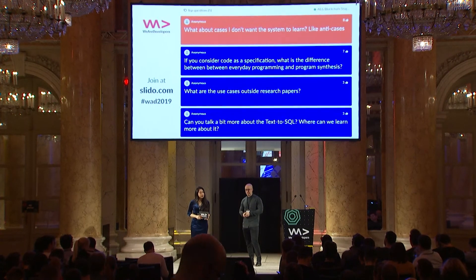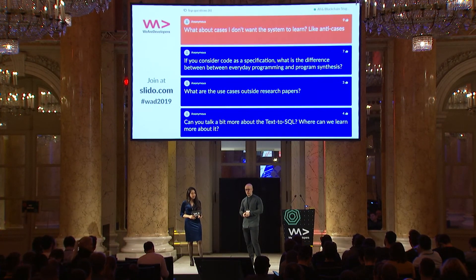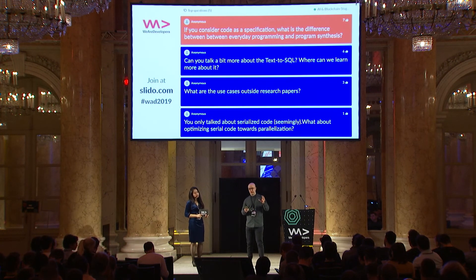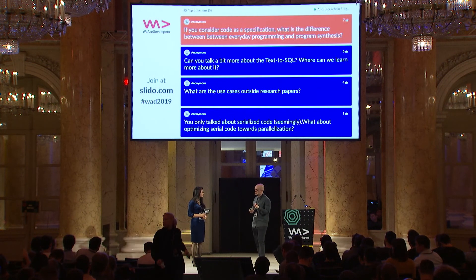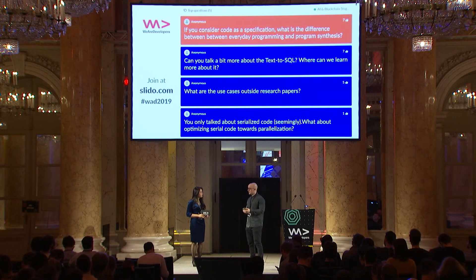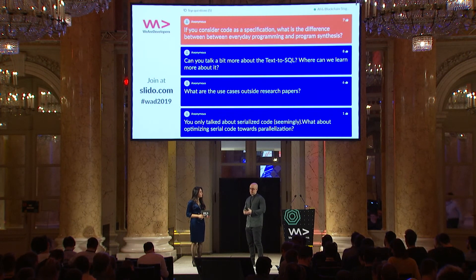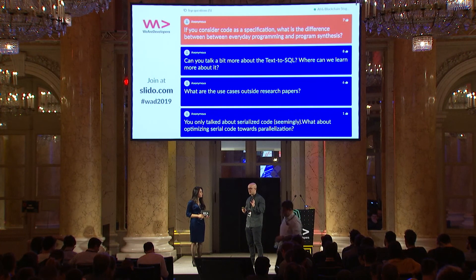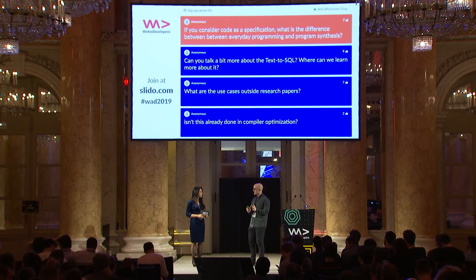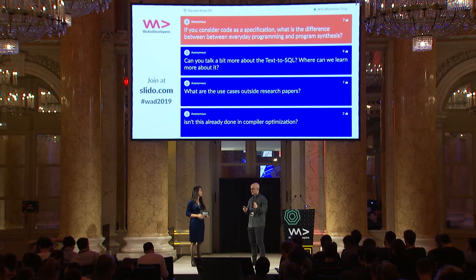The next question: if you consider code as a specification, what is the difference between everyday programming and program synthesis? Usually the idea is that you don't have an implementation in code yet. If you do, you can still use synthesis to optimize it. But the goal is to make sketching scale so you don't have to write complete code yourself — you tell the program what you want, maybe even in natural language, and the synthesizer does it for you. That would be an amazing future.